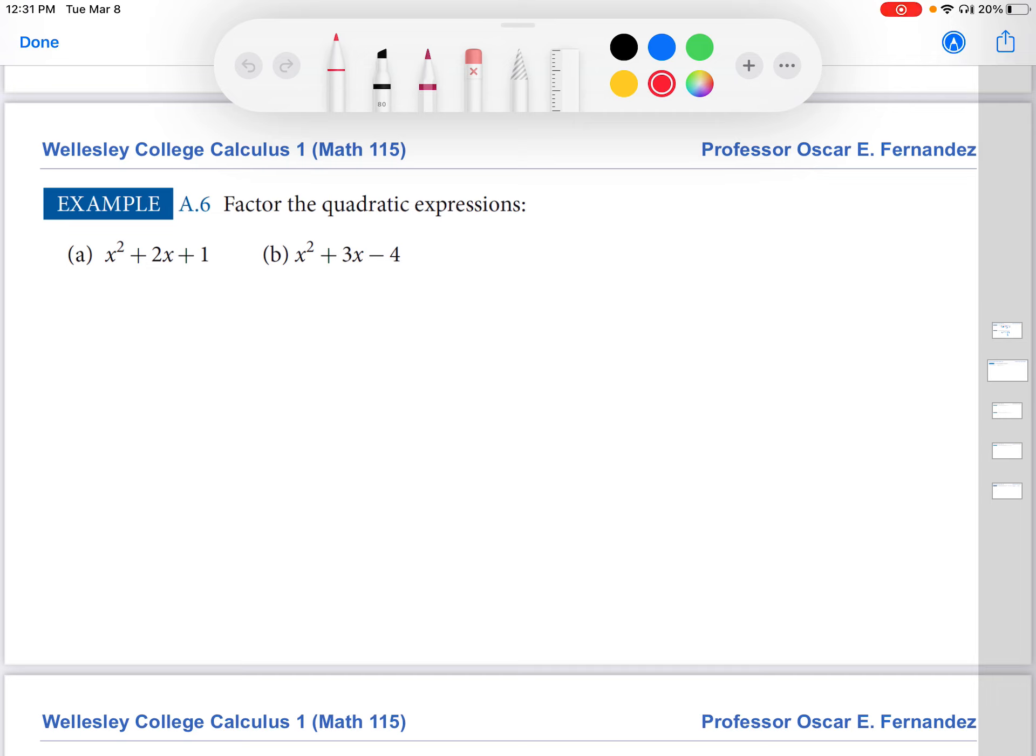You'll find this example in the appendix of the book. So the example says, well, there's two examples really. The first one says, factor the quadratic expression x squared plus 2x plus 1, and then the second one is a slightly different expression.